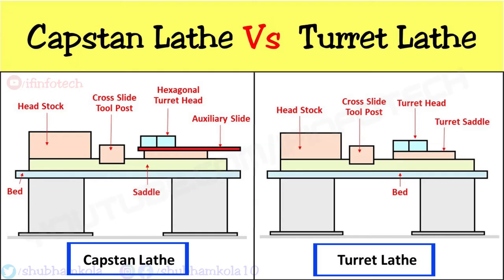Both capstan and turret lathes are machines used to produce a large number of identical parts in a minimum time interval, and are used for mass production in less time with maximum accuracy and precision. These lathe machines are also called semi-automatic lathe machines because machining processes such as boring, drilling, thread cutting, facing, and turning operations are done automatically.